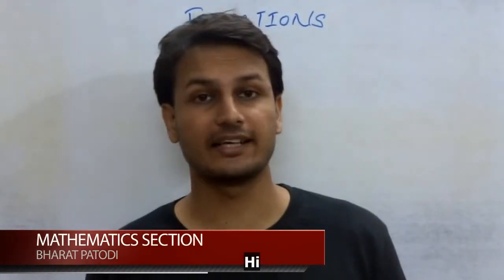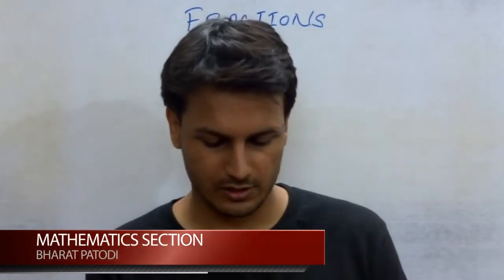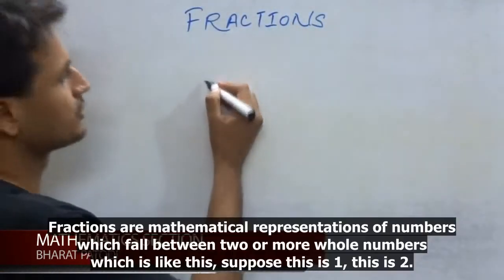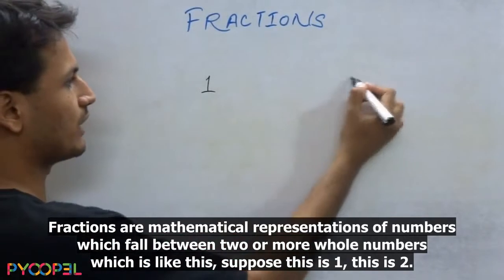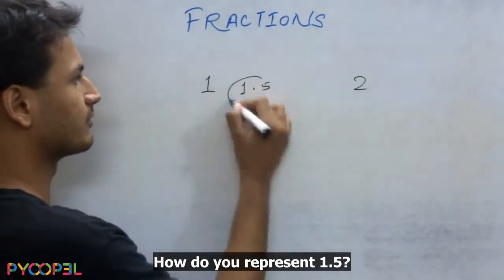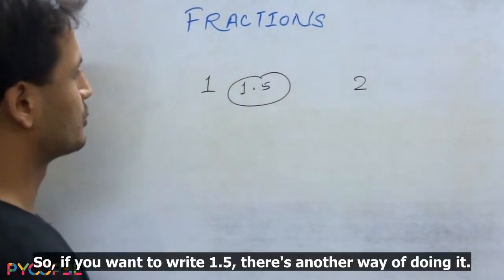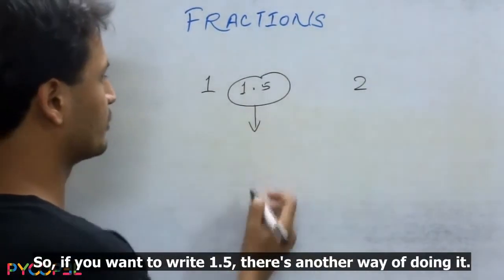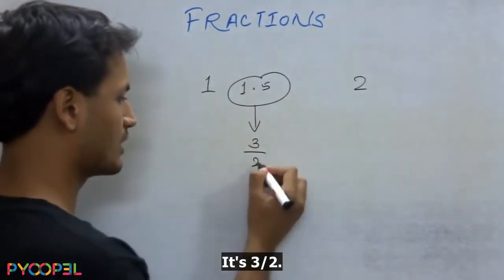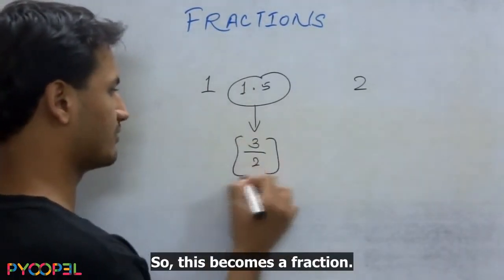Fractions are mathematical representations of numbers which fall between two or more whole numbers. Suppose this is 1, this is 2. How do you represent 1.5? If you want to write 1.5, there is another way of doing it. It's 3 by 2. So this becomes a fraction.